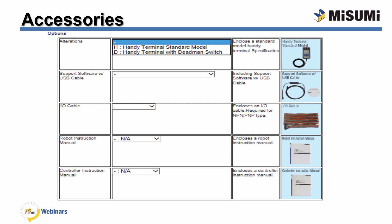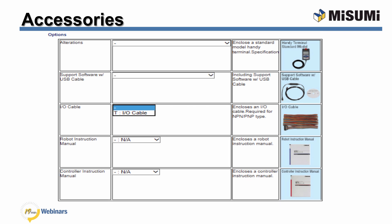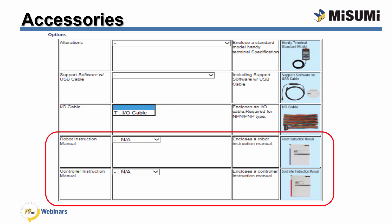Available accessories you can order with your robot include the handy terminal — a quick way to connect and program the robot without a PC, available with an e-stop or with an e-stop and a dead man switch. The USB serial programming cable includes the RS Manager software used to program, test, and control the robot through a PC using Windows. You only need to order one copy with your first robot. There is also a digital I/O cable and the option to select printed manuals, which include manuals for both the controller and the robot. A PDF copy is included with the RS Manager software package on the CD.